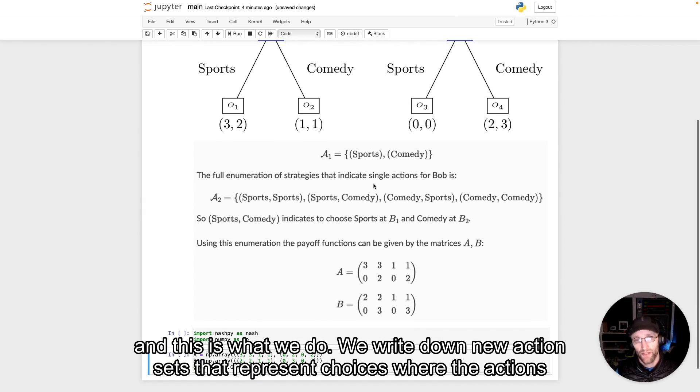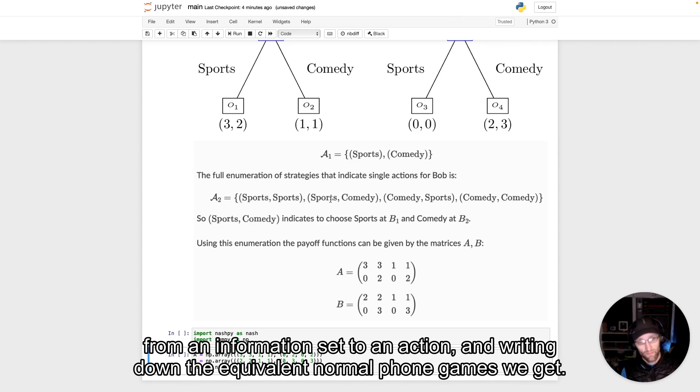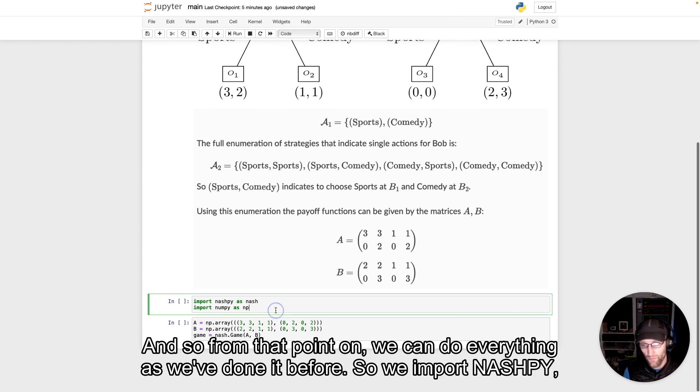We write down new action sets that represent choices where the actions are strategies in the extensive form game, and a strategy in the extensive form game is a mapping from an information set to an action and writing down the equivalent normal form games we get. And so from that point on we can do everything as we've done it before.